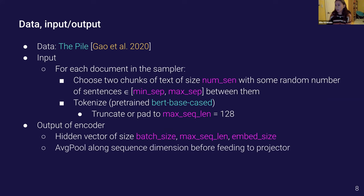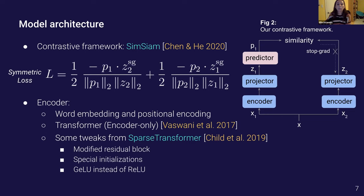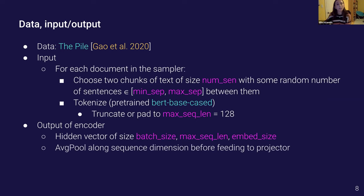For our encoder we basically just use a transformer encoder where we've added a few tweaks from OpenAI's sparse transformer implementation, namely they present this modified residual block and also some special initialization schemes and activation functions. Our model is pre-trained on the pile. This is a recent large language data set that captures a diverse range of modalities everything from books to code from GitHub repositories, web pages, medical papers, etc.